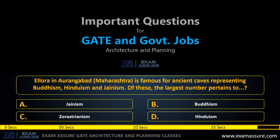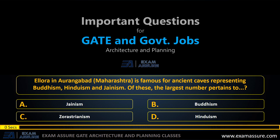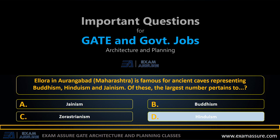Next question: Ellora in Aurangabad, Maharashtra is famous for ancient caves representing Buddhism, Hinduism, and Jainism. Out of these, the largest number pertains to — option A: Jainism, option B: Buddhism, option C: Zoroastrianism, option D: Hinduism. The correct answer is Hinduism.